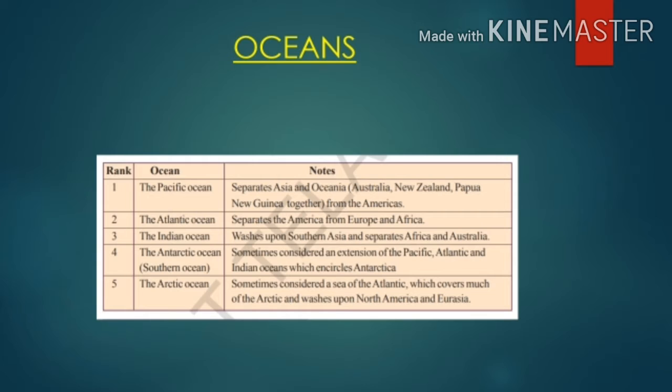The third ocean, the Indian Ocean, washes upon southern Asia and separates Africa and Australia. The fourth, the Antarctic Ocean or Southern Ocean, is the extension of the Pacific, Atlantic, and Indian Oceans and encircles Antarctica. The fifth, the Arctic Ocean, is sometimes considered a sea of the Atlantic, and it covers much of the Arctic, washing upon North America and Eurasian parts.